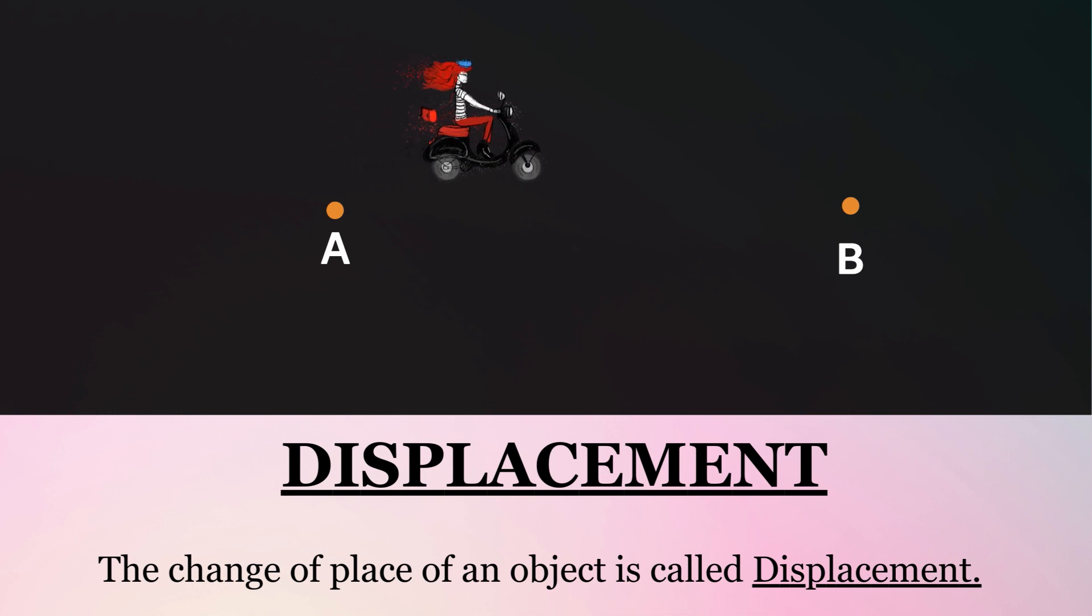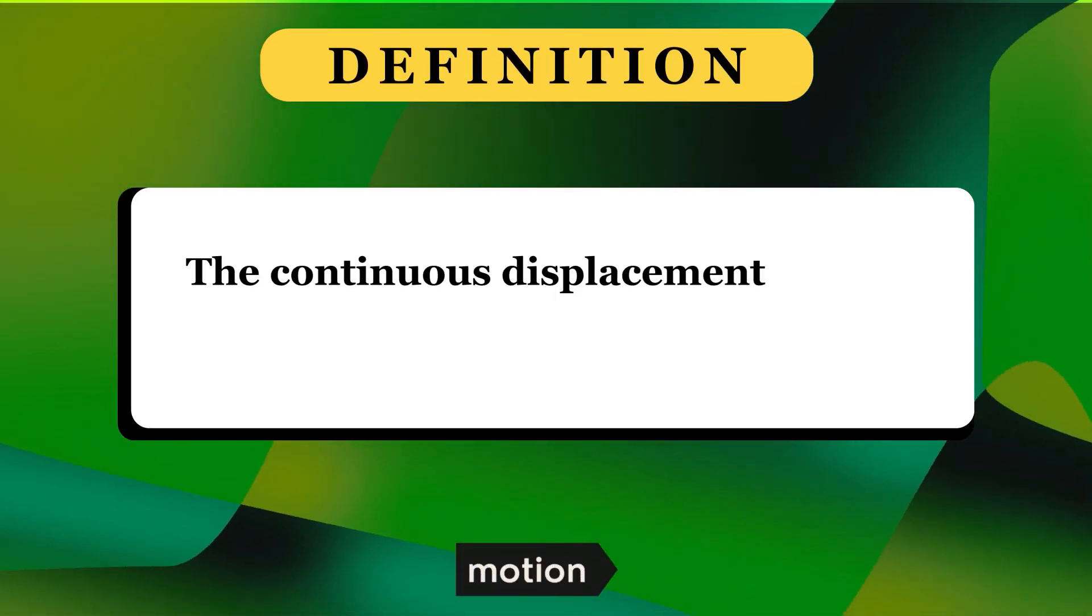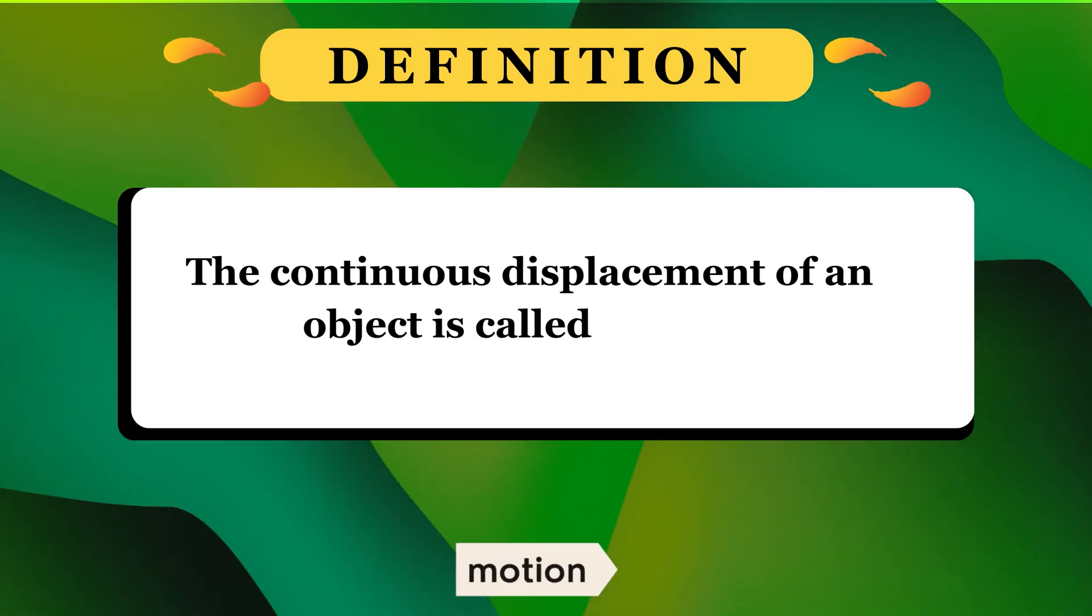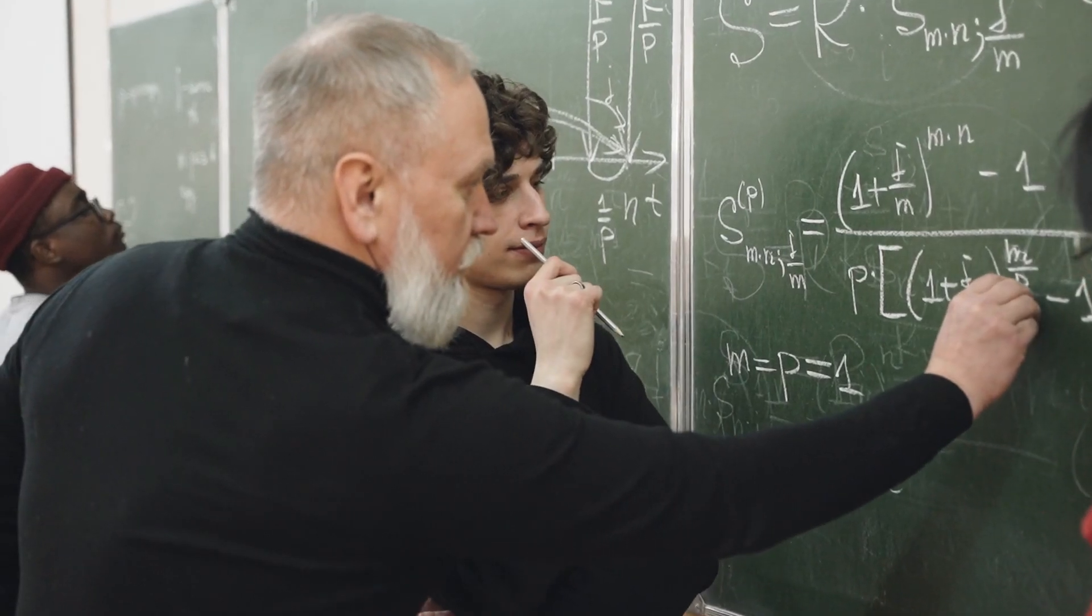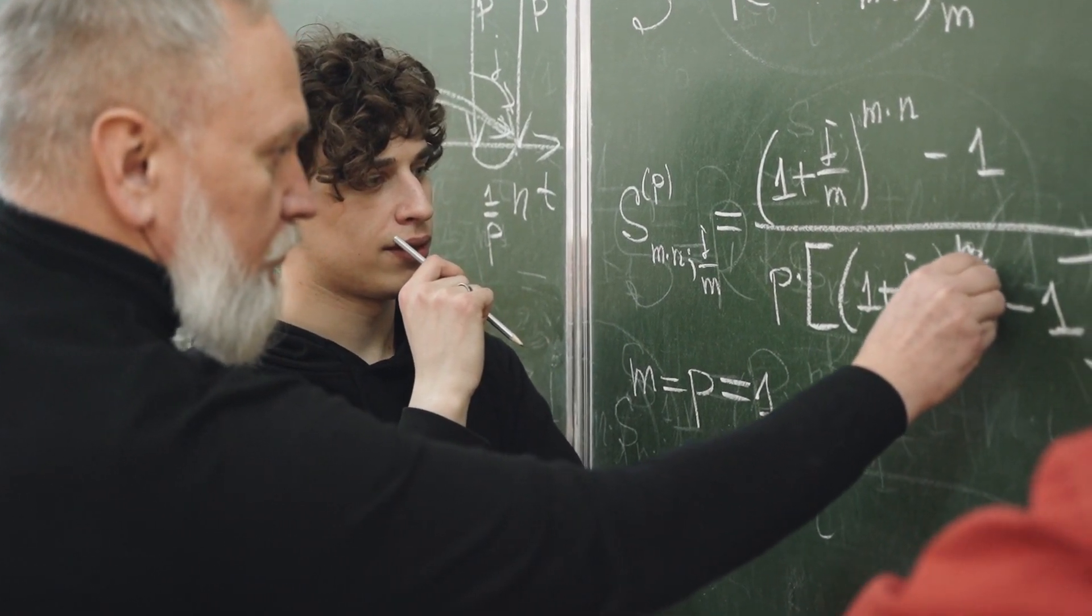So the definition of motion is: the continuous displacement of an object is called motion. It is a fundamental concept in physics and studied extensively in mechanics.